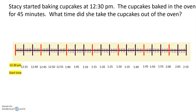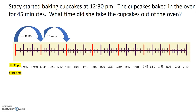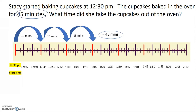The cupcakes were in the oven for 45 minutes, so I will label increments of 15 minutes above the timeline. 15 minutes plus 15 minutes plus 15 minutes is equal to 45 minutes. 45 minutes represents the number of minutes the cupcakes were in the oven.